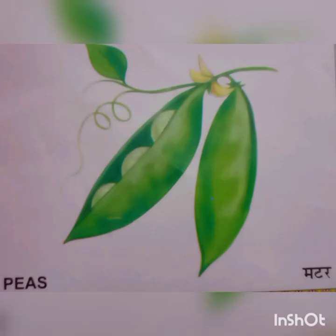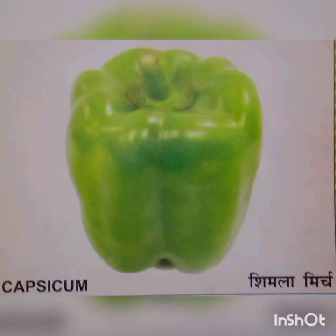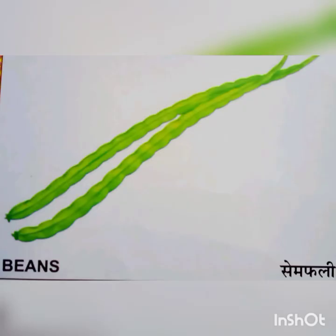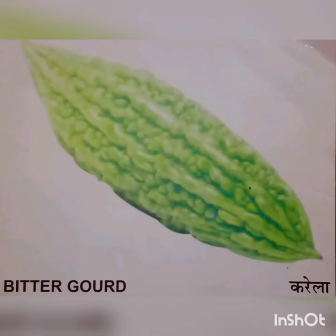Peas - Matar. Capsicum - Simla Mirch. Turnip - Shaljum. Beans - Simphali. Bitter Gourd - Karela.